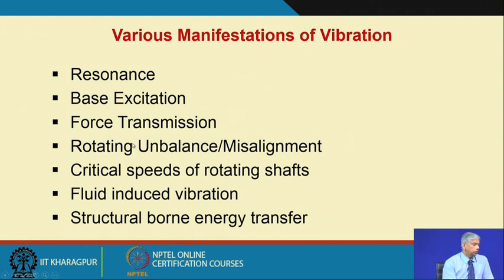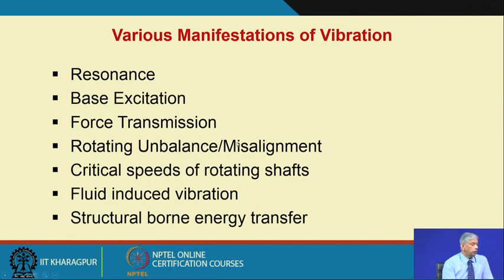Another source of vibration is rotating unbalance and misalignment — these are among the very common rotating machinery faults: unbalance in the rotating shaft or disc, and misalignment between two shafts connected by a coupling or supported on bearings. These give rise to vibrations. In rotor dynamics, critical speeds occur because shafts are flexible and have many natural frequencies; machines must avoid operating at critical speeds so resonance does not occur.